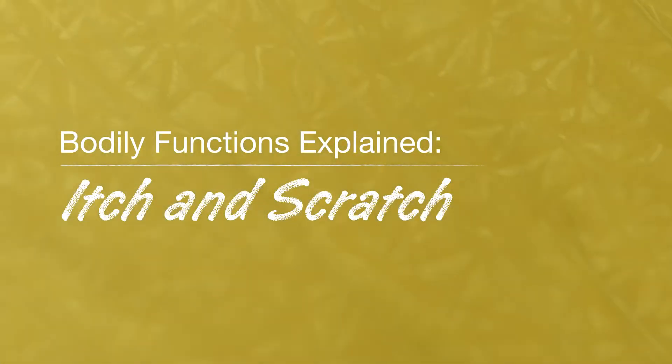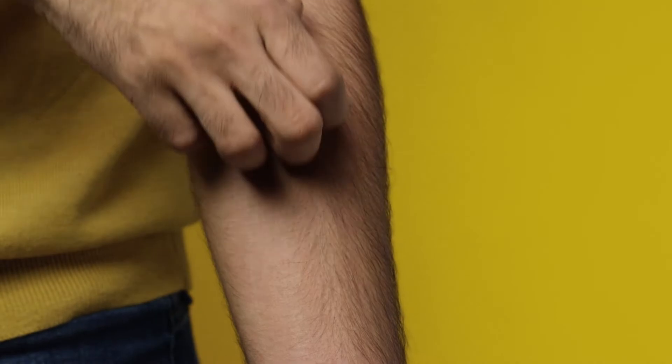An irritant triggers skin neurons to send an alert. A scratch is born. Here's what's happening.